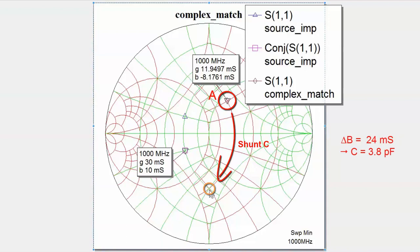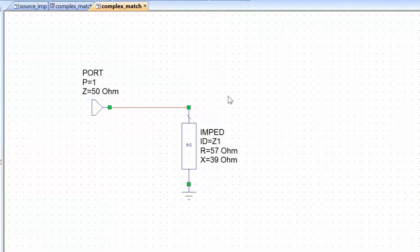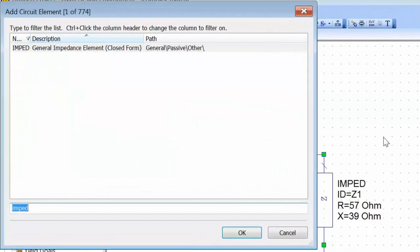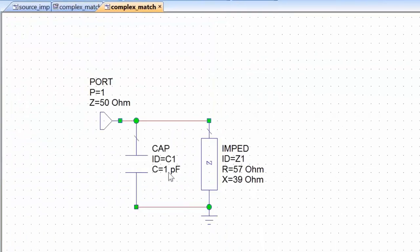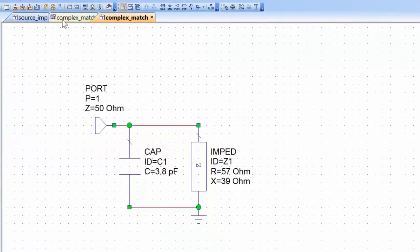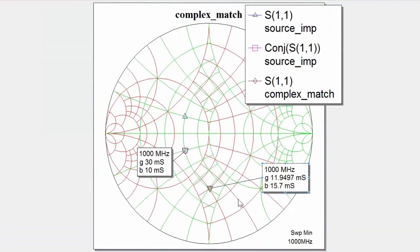A susceptance difference of 24 millisiemens corresponds to a shunt capacitor value of 3.8 picofarads. We go back to the schematic and add a capacitor in shunt with the load, set its value to 3.8 picofarads, then simulate and go back to the graph. We can see that we've moved exactly to the desired interim point — the intersection of the constant conductance circle through the load and the constant resistance circle leading to our target impedance.